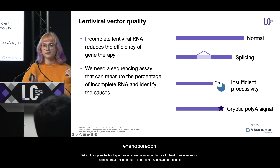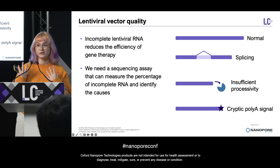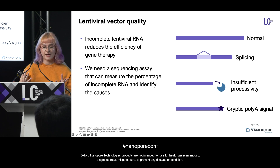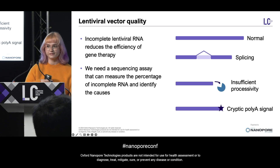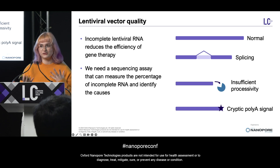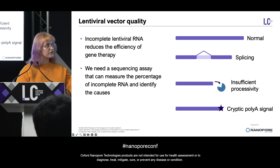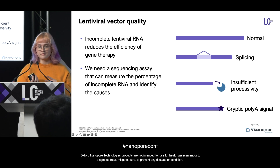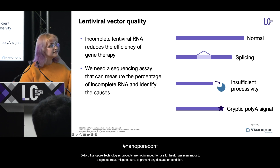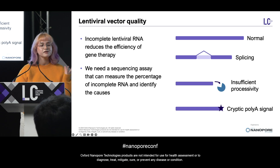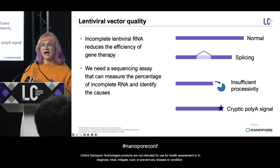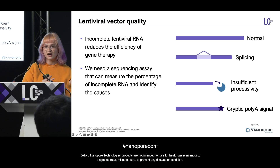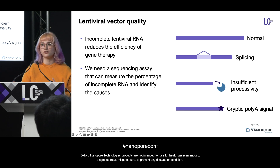One of the common problems in lentiviral gene therapy production is incomplete vector RNA. This definitely reduces the efficacy of the gene therapy because if you're missing important parts like part of the transgene or the promoter, that's not going to have a therapeutic effect for the patient. There are a number of different potential causes identified in the literature, including splicing, insufficient processivity of the RNA polymerase, and usage of cryptic poly A signals. Because there are so many different potential causes, it's really important that we have an assay that can not only measure how much RNA is incomplete but also tell us why, so that we can go on to address these things.